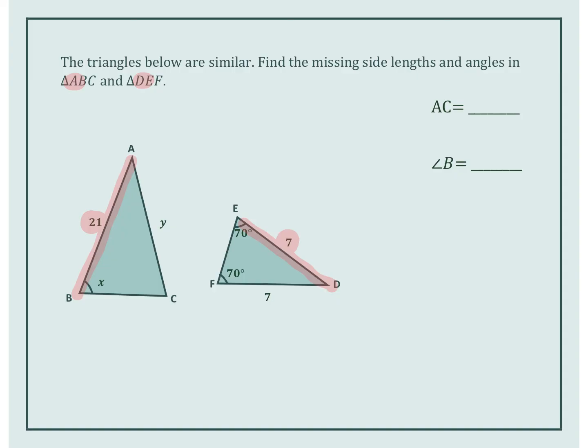So 21 over 7 equals, now I'm looking for AC. AC goes with DF, right here. So I'm going to put these two into a ratio, into a fraction, that way I can solve it.